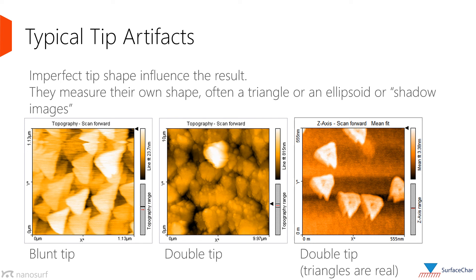The AFM tip mechanically samples the surface, and thus the condition of the tip has a direct impact on image quality. Shown here are two common tip artifacts due to a damaged tip. A blunt tip will contact features with its sides; for a tip with a triangle cross section, every feature will look like a triangle. Another common artifact is a double tip, where instead of one apex the tip has two, resulting in the duplication of every feature in the image.